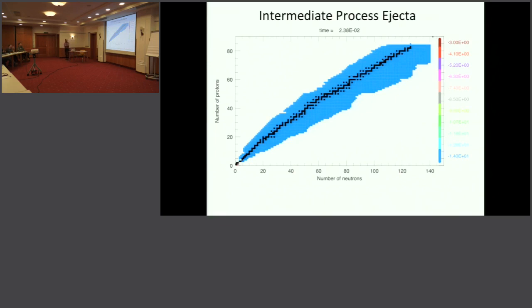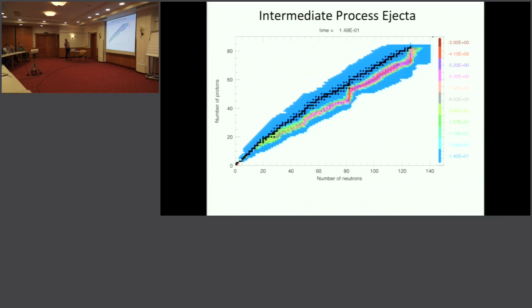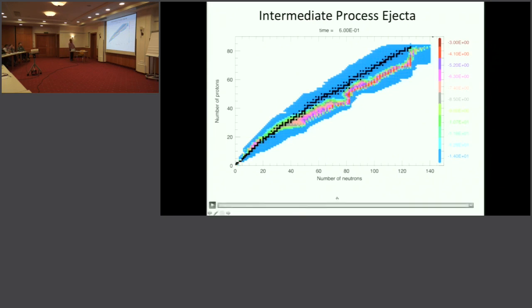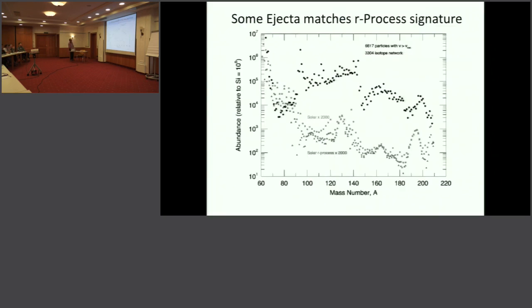This ejecta has interesting nucleosynthetic yields. As material accretes, some of it becomes neutron-rich—not all the way to the neutron drip line, but far enough that free neutrons can capture and push up to the third peak of the R-process. So it's possible that fallback accretion can produce some R-process elements, though it probably can't explain all of the R-process.